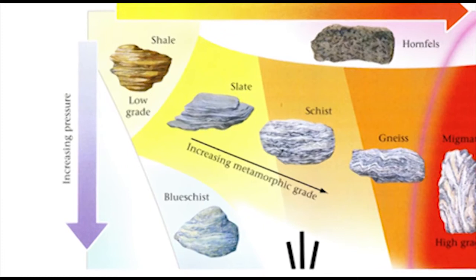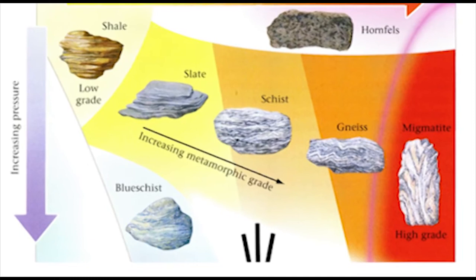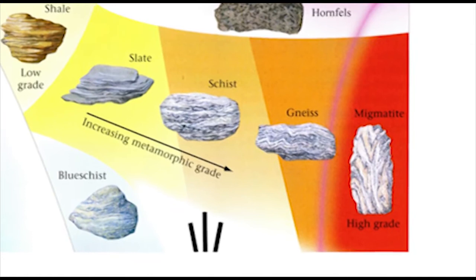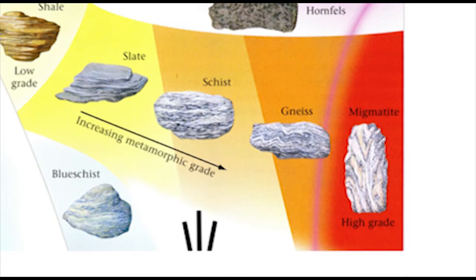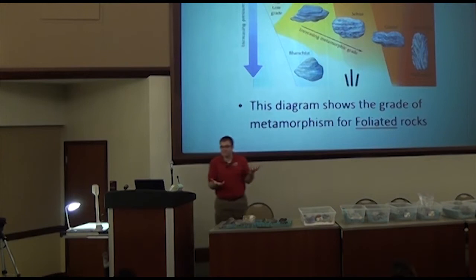With more pressure, shale becomes schist, which definitely doesn't look like the original shale. That's moderate grade. Give that schist even more pressure and heat and you get gneiss, which looks nothing like the original. It starts to almost crystallize out the different minerals. The last step — not in our kit and pretty rare — is migmatite, which is essentially remelted and almost an igneous rock.